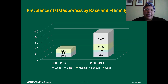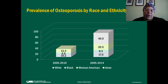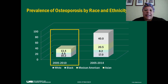When evaluating the prevalence of osteoporosis by race and ethnicity, the data source to do so in the United States is the National Health and Nutrition Examination Survey, or NHANES. Using the 2005 to 2010 NHANES data, the prevalence of osteoporosis was highest in Mexican Americans, followed by non-Hispanic whites, and lowest in non-Hispanic Blacks.